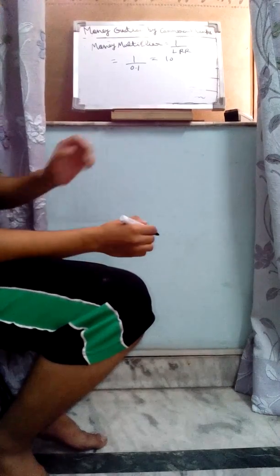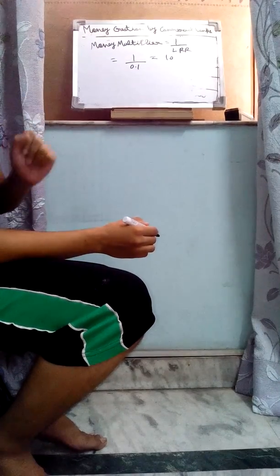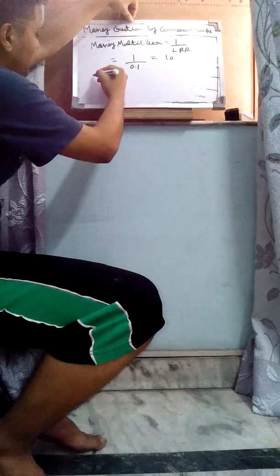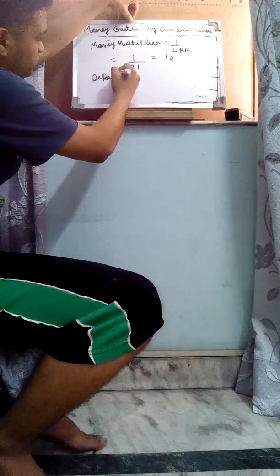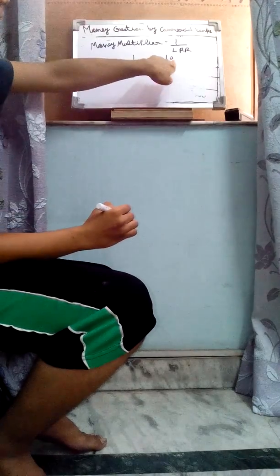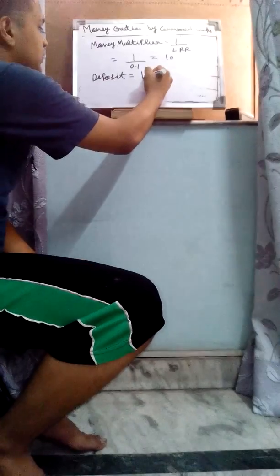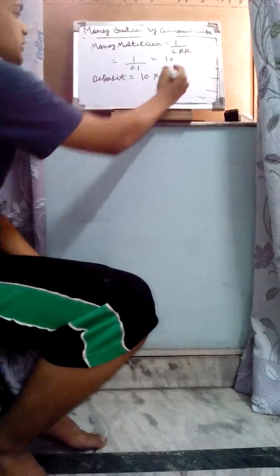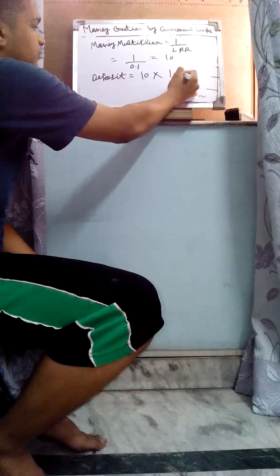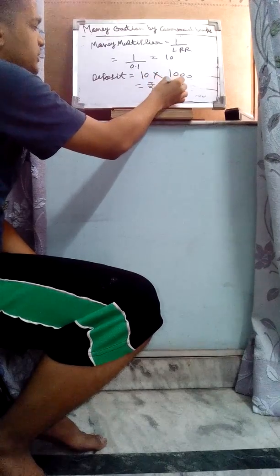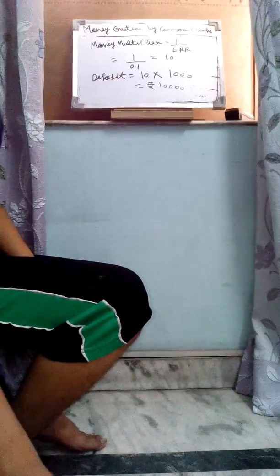The total deposit will be rupees 10,000. I can prove it: money multiplier is equal to 10, multiplied by the cash reserve of rupees 1000, so we get deposit equal to rupees 10,000.